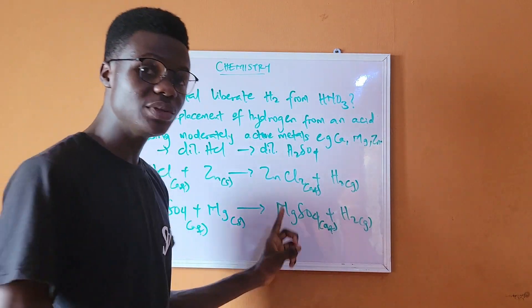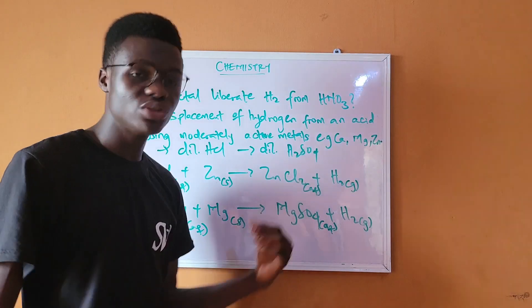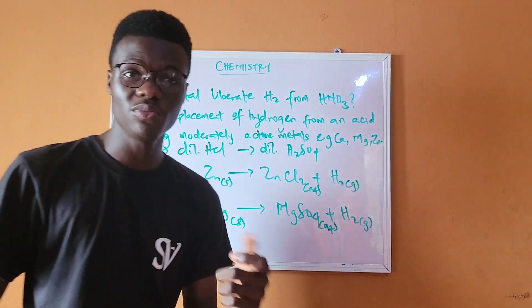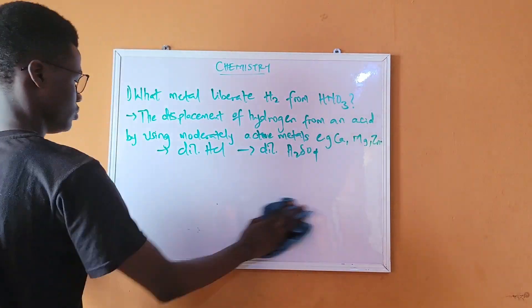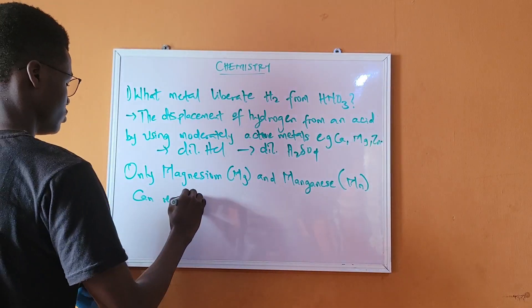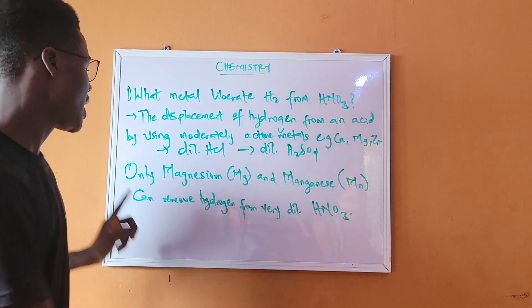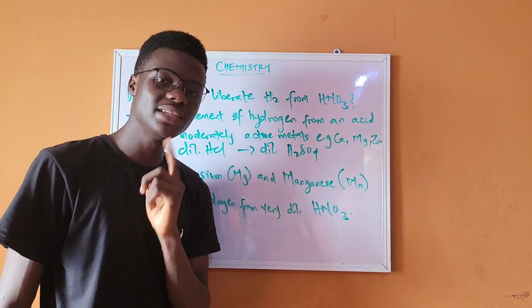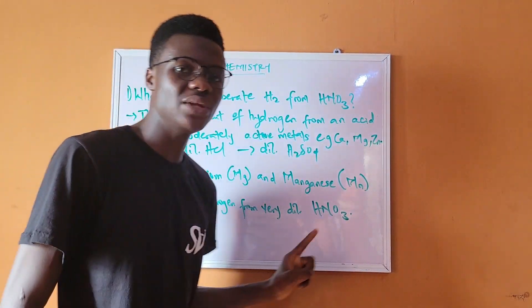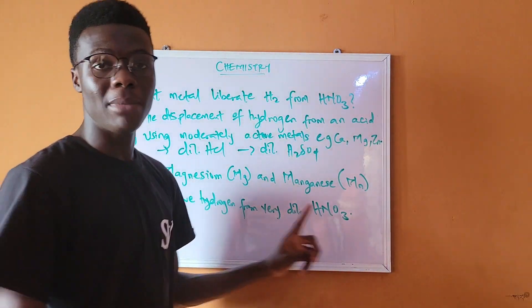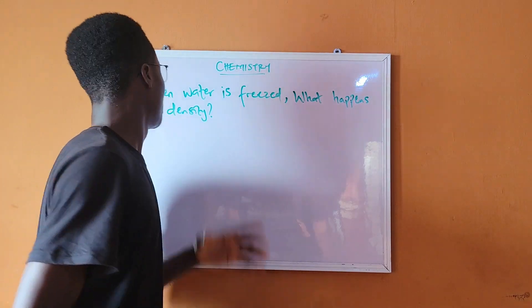There is an exception in chemistry. Although HNO₃ is generally not used for this reaction, there are two metals that can actually remove hydrogen from HNO₃: only magnesium and manganese can remove hydrogen from very dilute HNO₃. So the answer is magnesium and manganese.